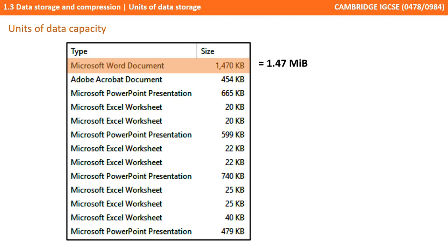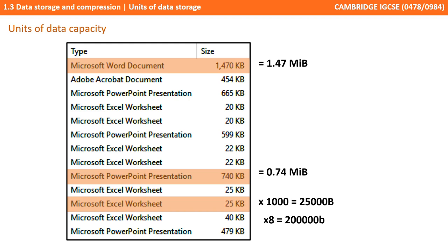Here we have a Microsoft Word document which is 1,470 kibibytes. To get this into mebibytes, we divide roughly by 1,000, so this Word document is 1.47 mebibytes in size. Here we have a PowerPoint presentation — 740 kibibytes, which dividing by approximately 1,000 gives us 0.74 mebibytes. Let's take this Microsoft Excel worksheet: 25 kibibytes in size. To work it out in individual bits, we times approximately by 1,000 to get 25,000 bytes, then times by 8 because there are 8 bits in a single byte.